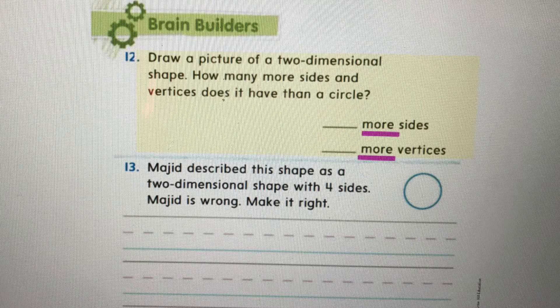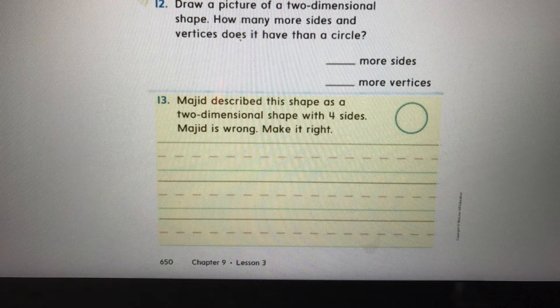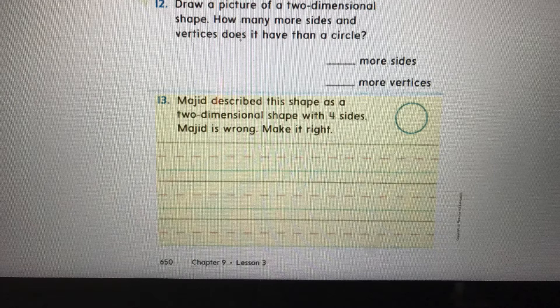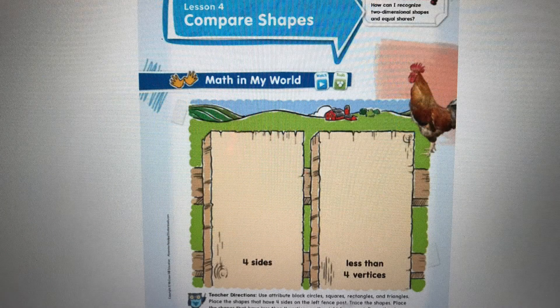Problem twelve, draw a picture of a two-dimensional shape. How many more sides and vertices does it have than a circle? Well, we know a circle is zero, so whatever shape you draw, it has to have more than zero sides and vertices. Mahit described the shape as a two-dimensional shape with four sides. Mahit is wrong. Make it right. We know that this is a two-dimensional shape, but it does not have four sides. How many sides does it have? Write it on the line in your best handwriting. If you don't know how to spell sides, go back to the story problem and find that word and underline it to help you.